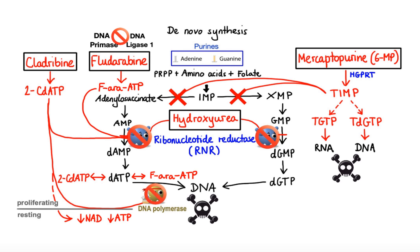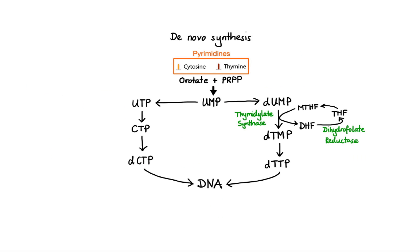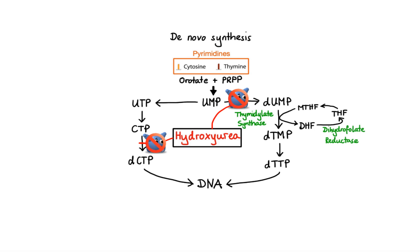Now let's switch gears and move on to discussing anti-metabolites that affect the de novo synthesis of pyrimidines. Just like in the purine synthesis pathway, hydroxyurea inhibits ribonucleotide reductase, which converts ribonucleotides into deoxyribonucleotides.